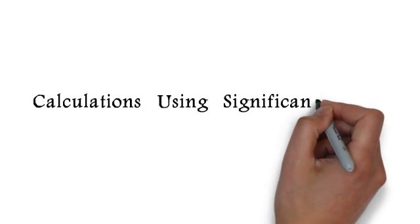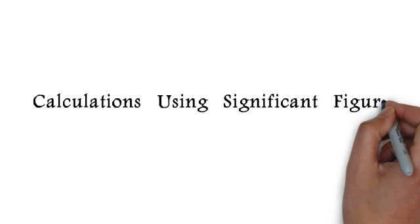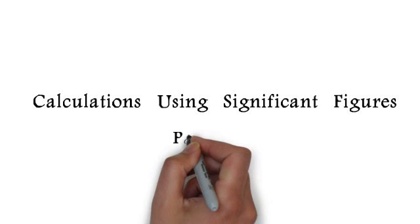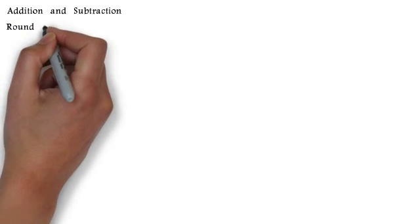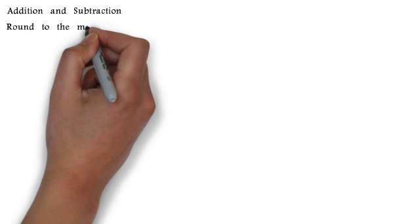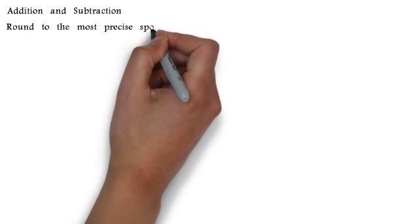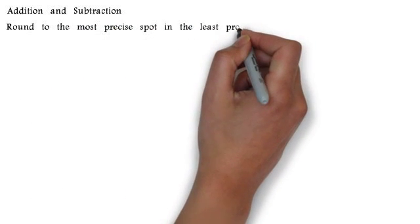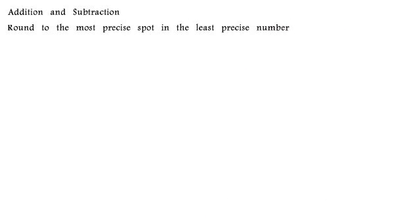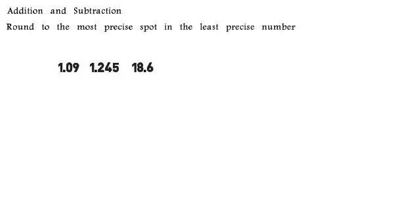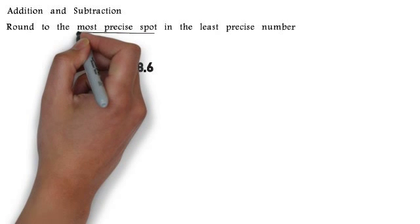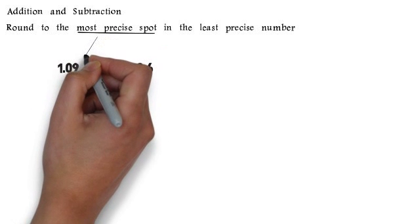We're going to be talking about calculations using significant figures. This is part two, where we're going to focus on addition and subtraction. The rule when adding or subtracting numbers that have significant figures is that you round to the most precise spot in the least precise number used.